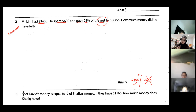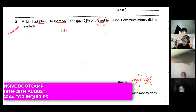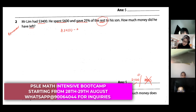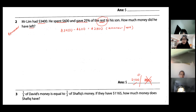Let's find the rest or the remainder first. We take three thousand four hundred dollars and take away what he spent — six hundred dollars — and we get two thousand eight hundred dollars. This is the remainder, or in short, the rest of his money after spending six hundred dollars.